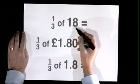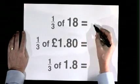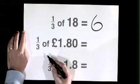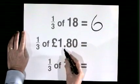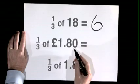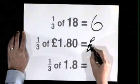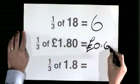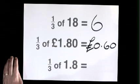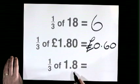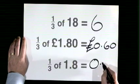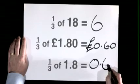One third of eighteen is six. One third of one pound eighty is no pounds sixty, or sixty p. One third of one point eight is zero point six.